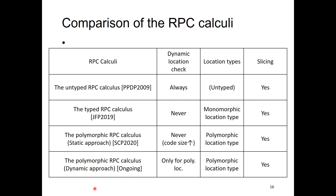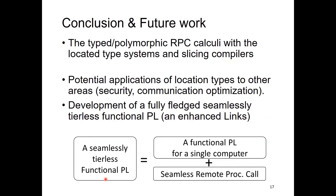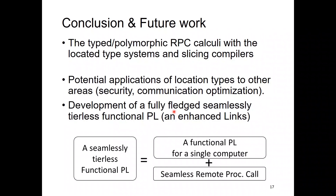This slide shows a comparison among the RPC calculi. To support the slicing compilation of the polymorphic RPC calculus, there are two approaches: one is a static approach described in the JFP paper, and the other is a dynamic approach that we are currently working on. In this talk, I presented a theory of RPC calculi. There are potential applications of location types to other areas such as security and communication optimization. Also, we want to develop a fully-fledged seamless tierless functional programming language based on the theory. Thank you for your attention.